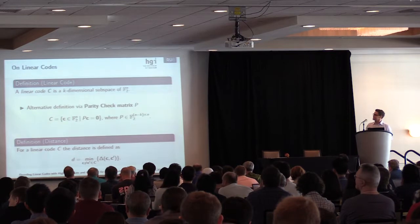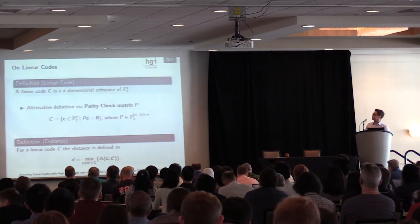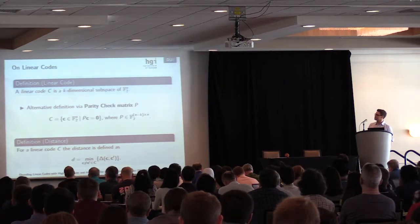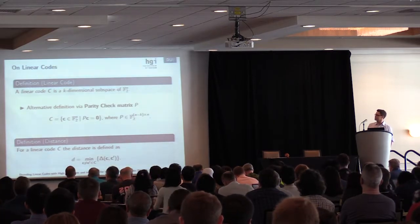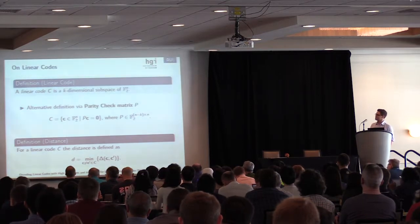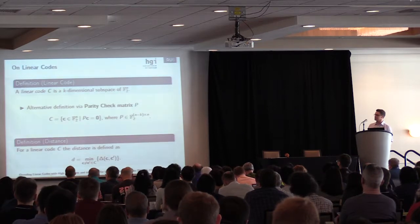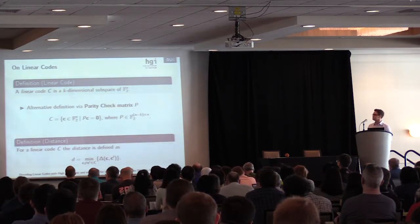Let's define linear codes. A linear code C is simply a K-dimensional subspace of F2 to the n. An alternative and equivalent definition for this talk is via the parity-check matrix H, because then we can define the linear code as a set of all vectors which satisfy H times c equals zero.